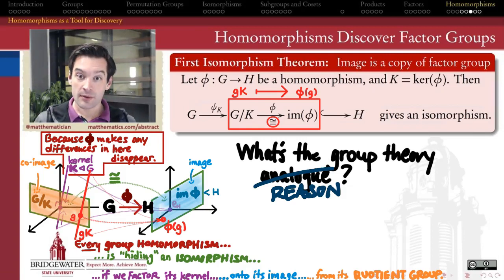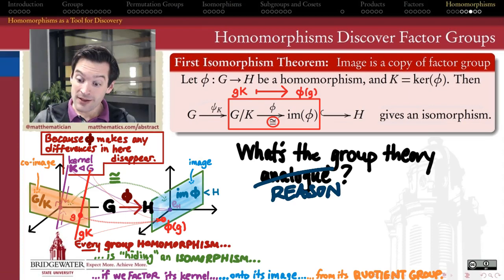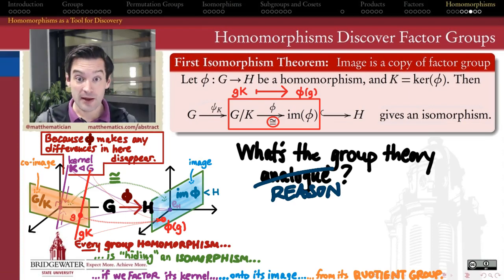We've seen how the first isomorphism theorem is plausible given reasoning from linear algebra that was very similar when we talked about the rank-nullity theorem.